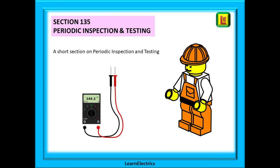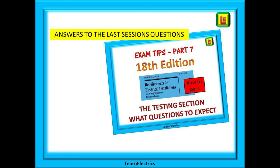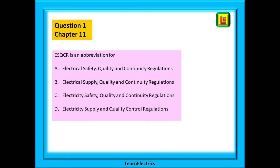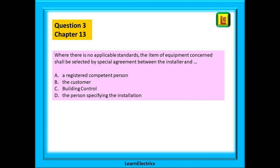Section 135 very simply states that installations should be periodically inspected and tested during their lifetime. That is part one of the wiring regulations. Now let's look at a few questions. The correct answers to the four questions from the last session on the testing section are shown in the list — hopefully you got all four correct. For this week: question one is about chapter 11, question two is on chapter 12, and question three is to do with chapter 13. Answers as usual in the next exam tips session.